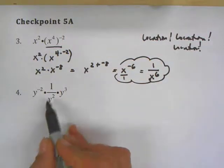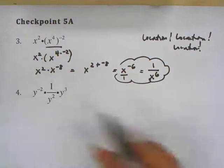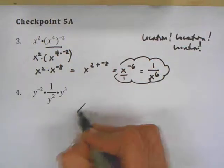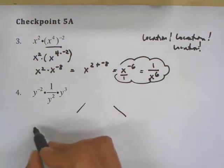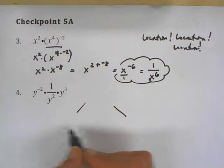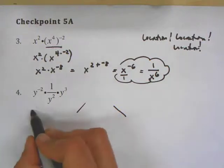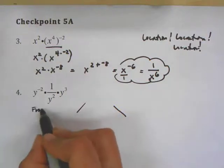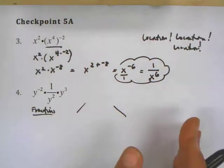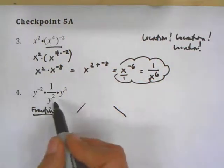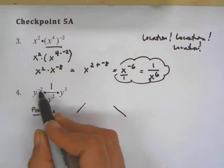Now this next problem: y to the negative second times 1 over y squared times y to the third. There are a couple of ways you could approach this. One way is making everything as fractions, so I'm going to start with that — rewriting everything without any negative exponents.